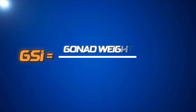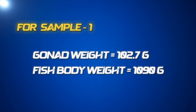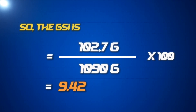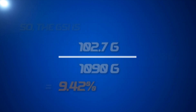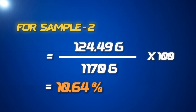GSI is the ratio of gonad weight to the total fish body weight multiplied by 100. For sample 1, the gonad weight is 102.7 grams and fish body weight is 1090 grams, so the GSI is 9.42%. Following the same formula, the GSI of sample 2 is 10.64%.